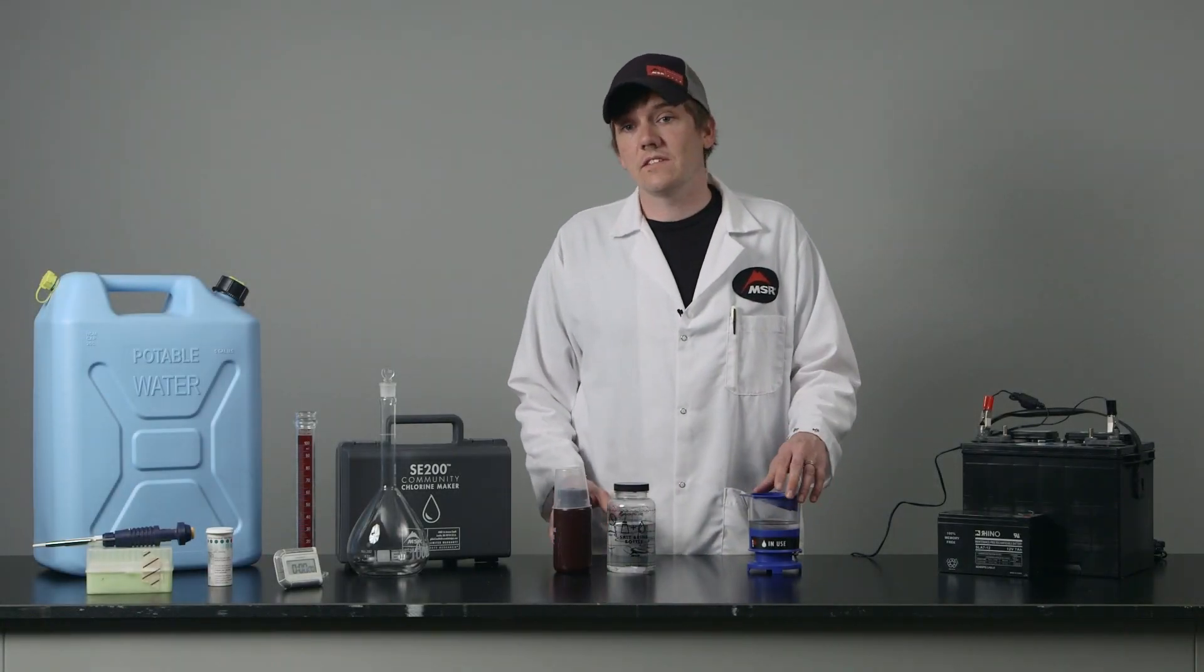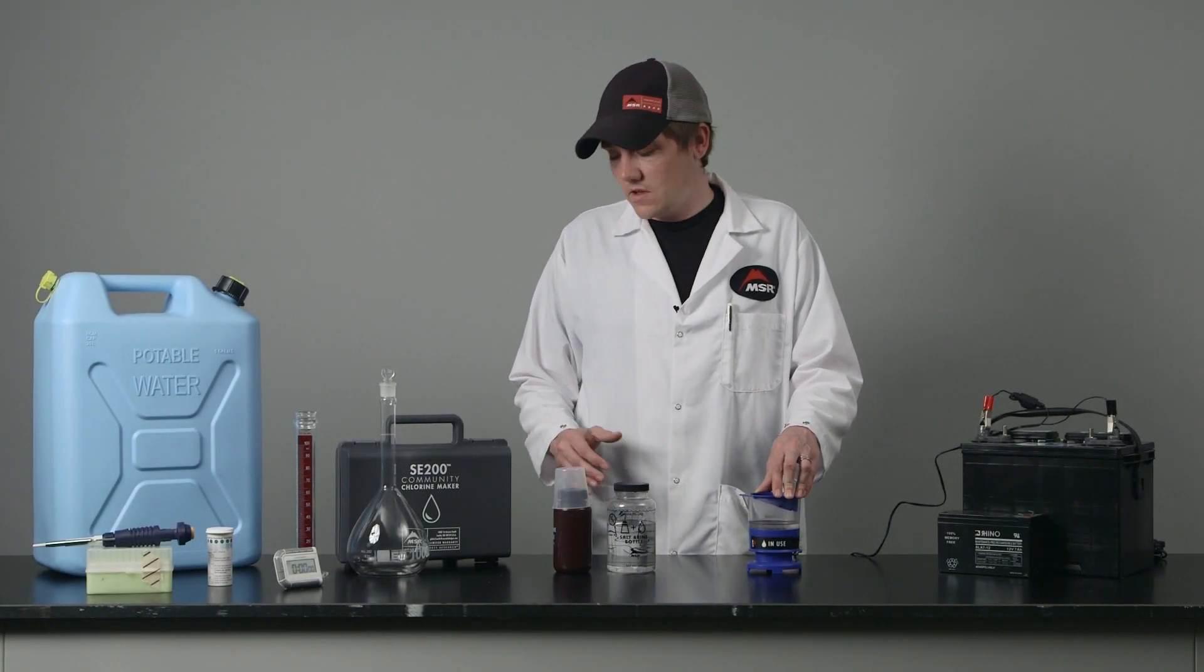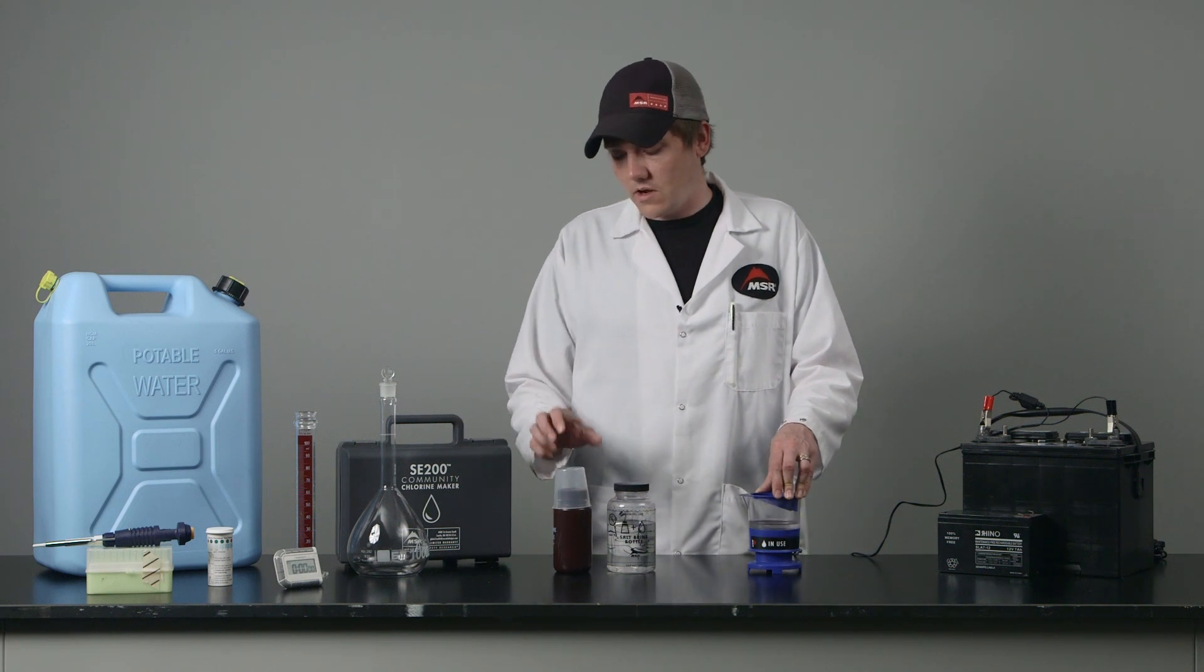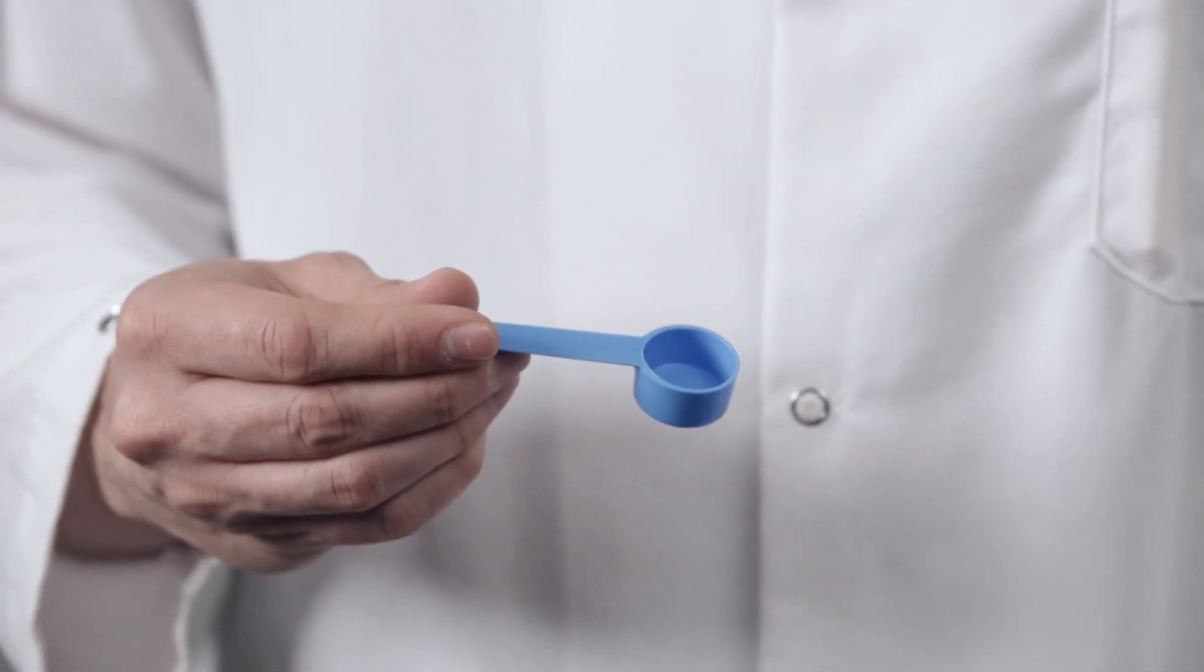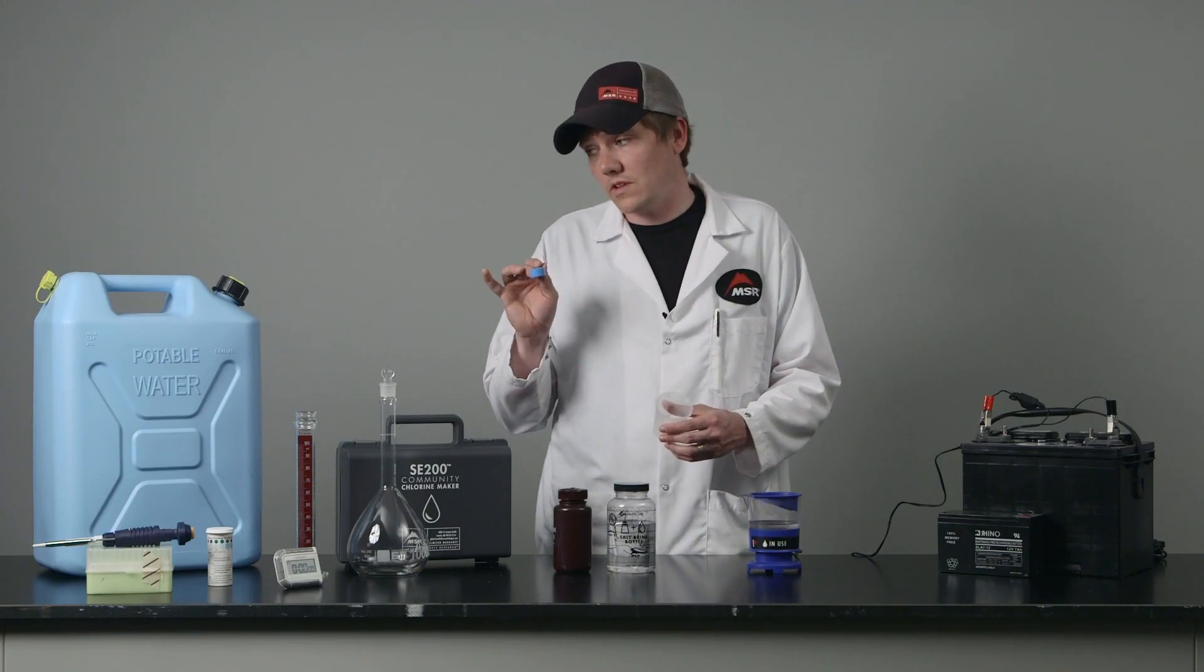Now that the run is complete, the next thing to do is to treat the water. This can be done using the measuring cup or the scoop that comes with the kit. The scoop is designed to measure the correct amount to treat one 20 liter jerry can.